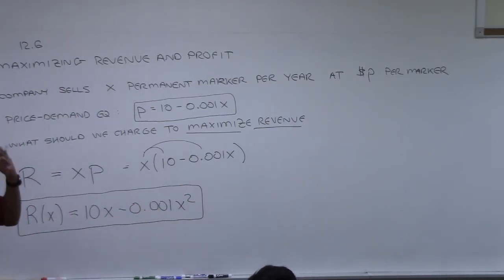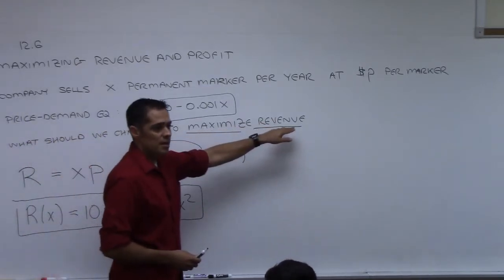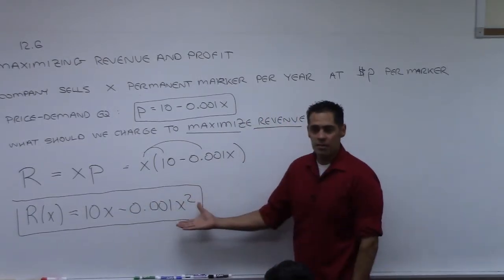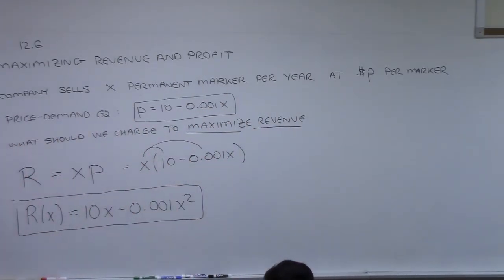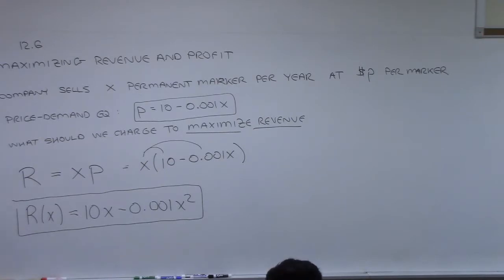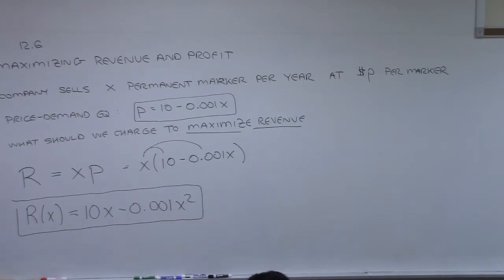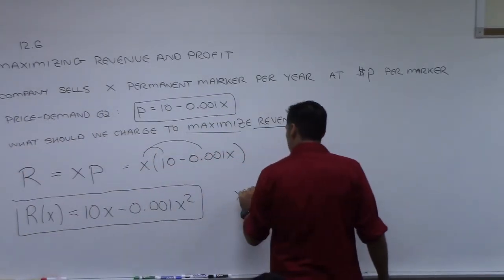All of these optimization problems are going to ask you to find either the maximum or minimum of a function. We want to find the revenue function in terms of a single variable — that's R(x) equals 10x minus 0.001x squared. Now, x must be greater than or equal to zero since we can't sell a negative number of markers.